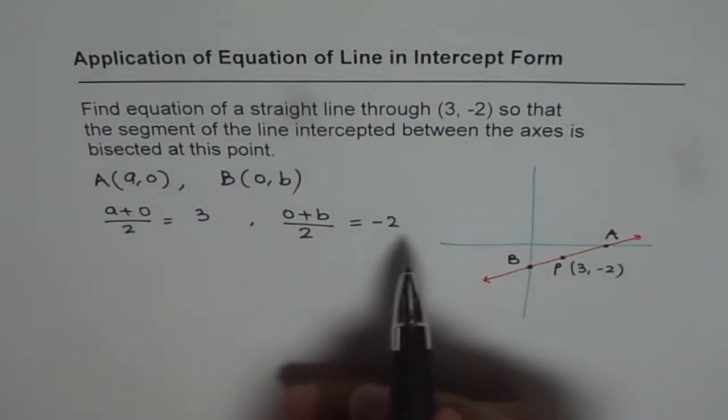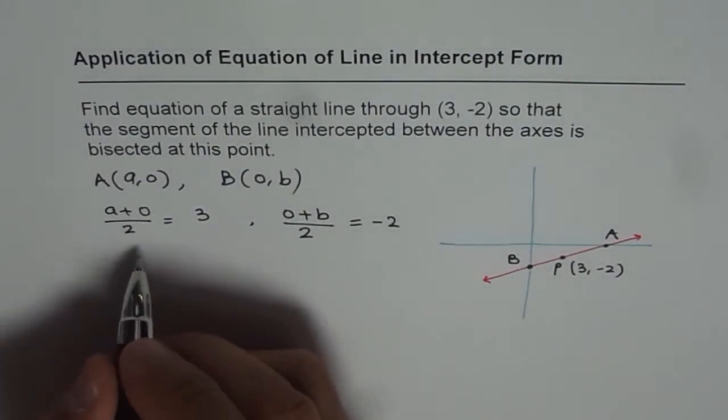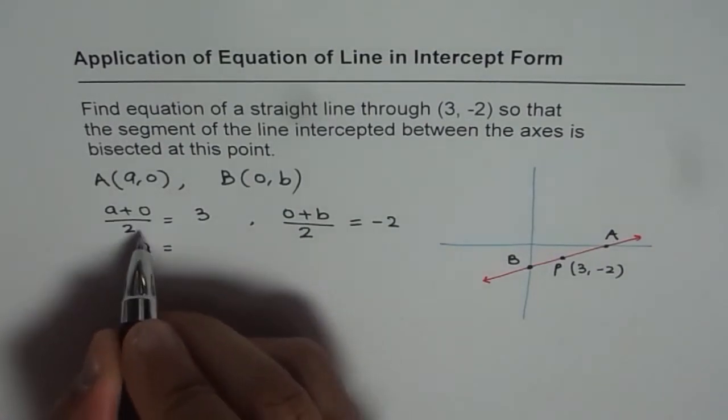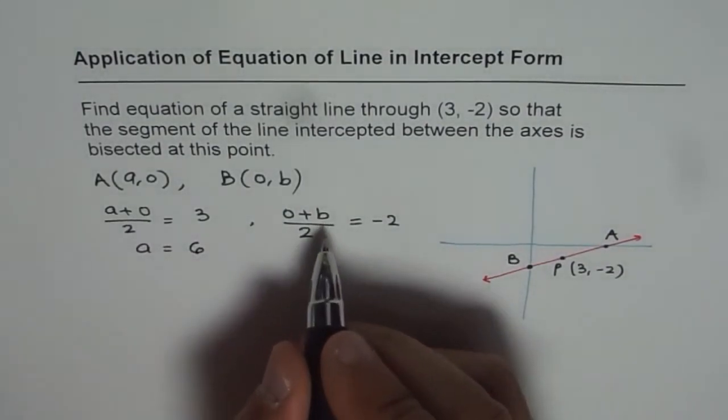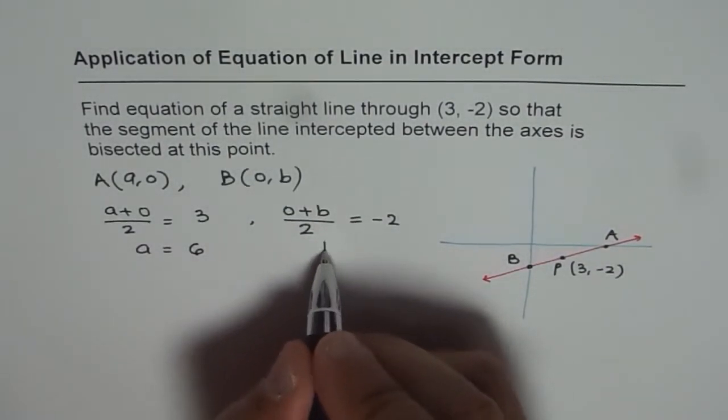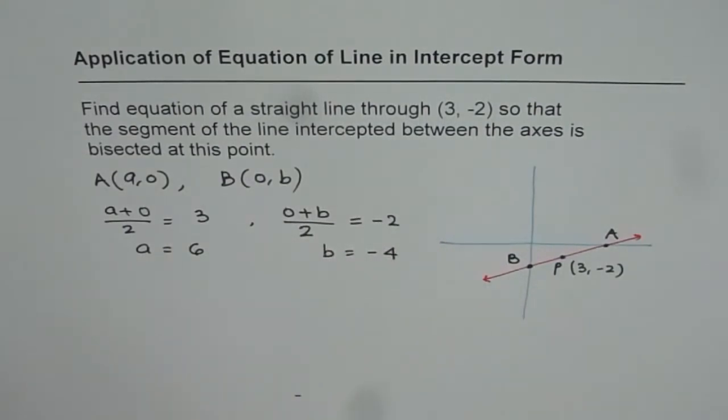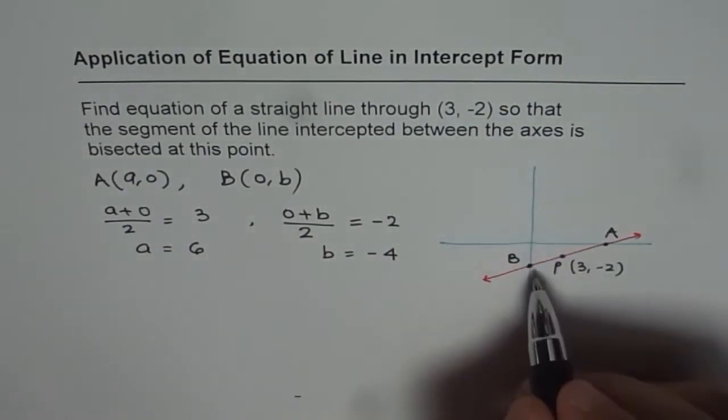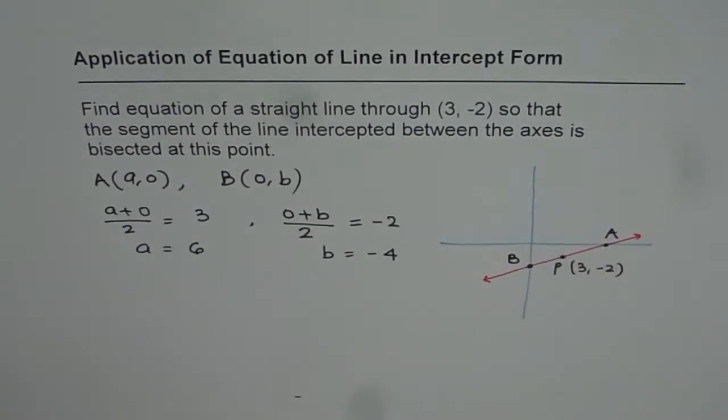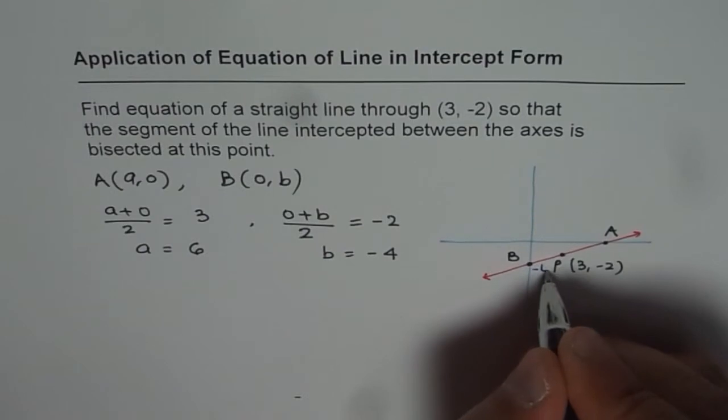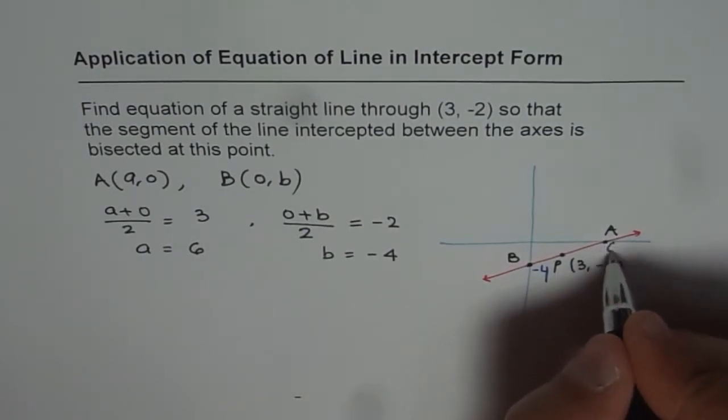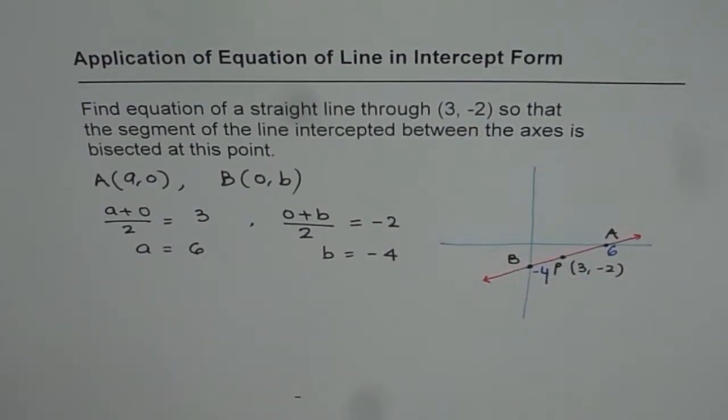Now from here, we can solve A and B. So from the first part, we get A equals to 3 times 2 as 6. And from the second part, we get B equals to -4. So we got now B as -4. So let me write down -4 for B. So this is -4 for us and A is 6 for us. Now we know x and y-intercepts. And so we can easily write down the equation of the line.